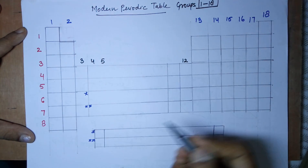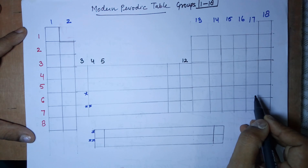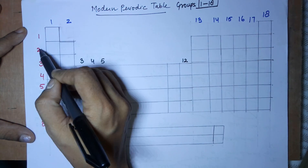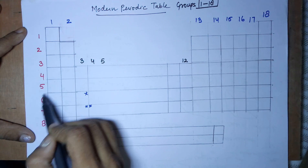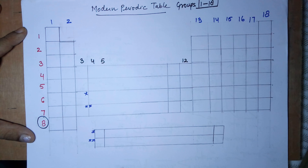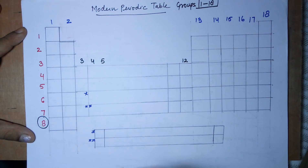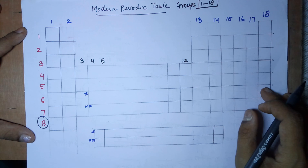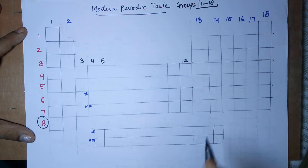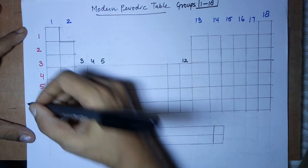Coming to the periods — periods is the name given to the horizontal rows. The horizontal rows are numbered as the first row, second row, third row, fourth row, fifth row, sixth row, and seventh row. I have taken an eighth row also, which you won't find in textbooks — I'll specify the reason a little later. These horizontal rows are called periods.